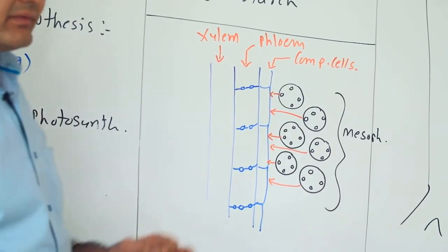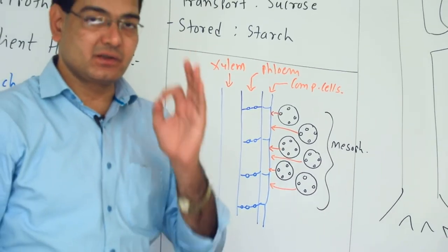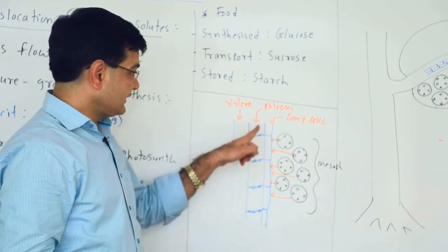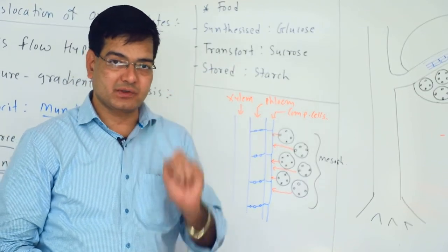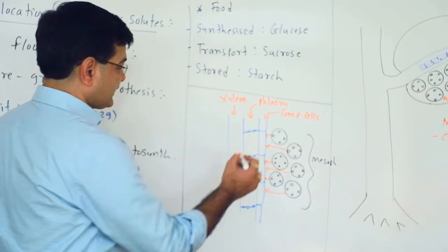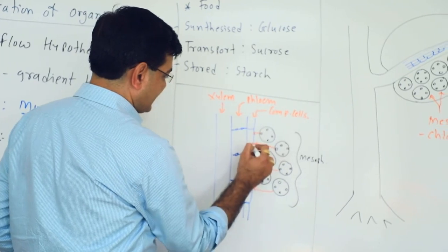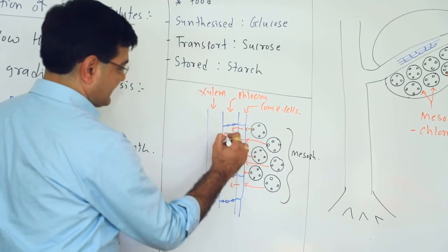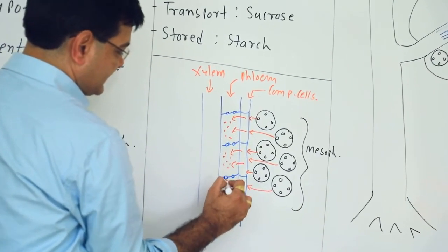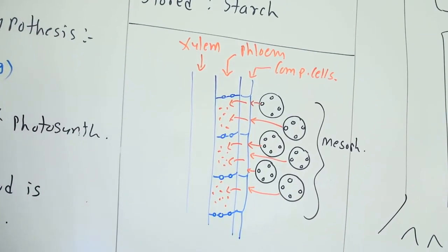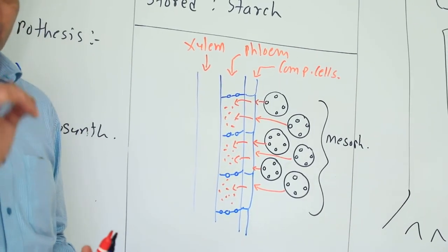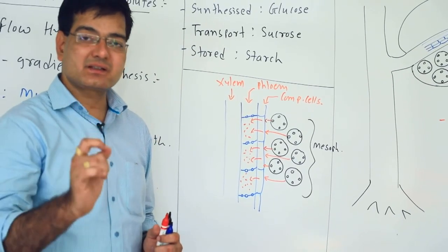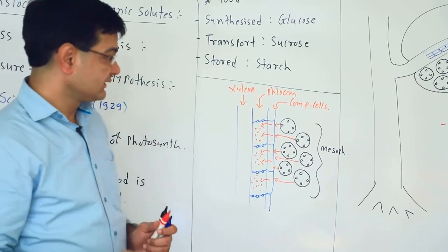This food material, which is in the form of sucrose — a non-reducing sugar — needs to cross the companion cell to enter into the sieve tube, the main part of the phloem. Remember that food needs to cross the companion cell and then gets deposited inside the sieve tube, which is part of the phloem. This transport of food material through the companion cell is by active transport, so energy is always utilized in that.